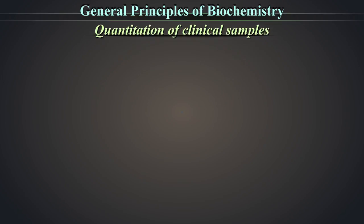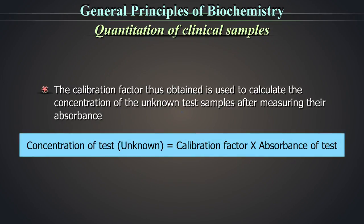Quantitation of clinical sample. The calibration factor thus obtained is used to calculate the concentration of the unknown test samples after measuring their absorbance. Concentration of the test, i.e. unknown, is equal to calibration factor multiplied by absorbance of the test.